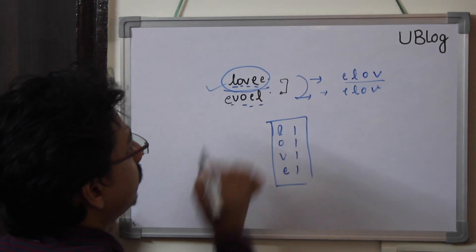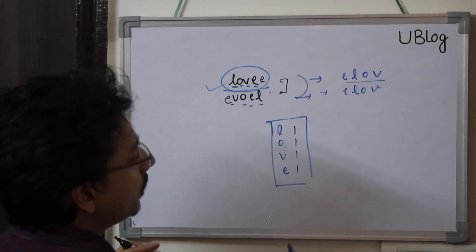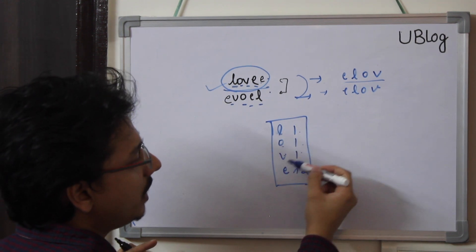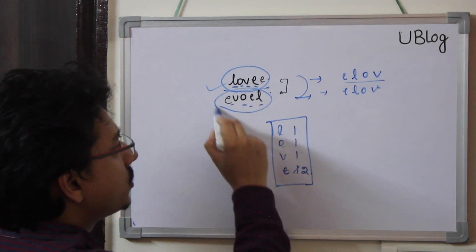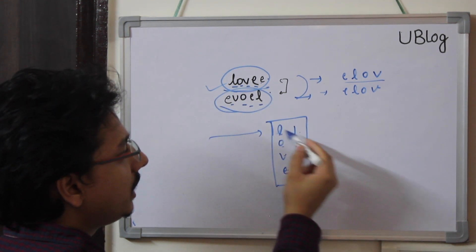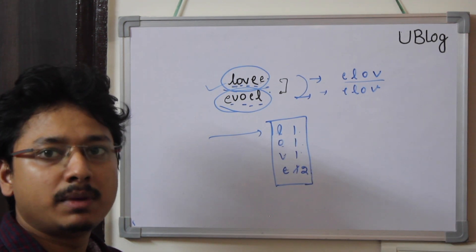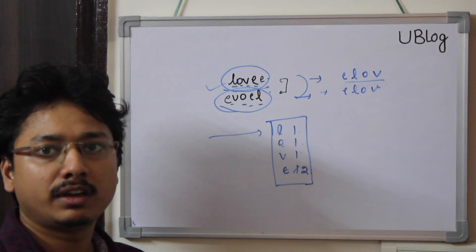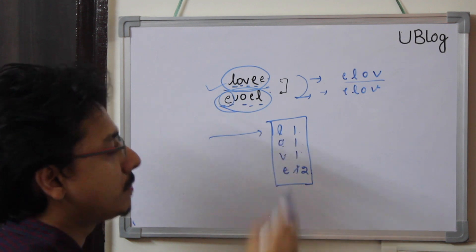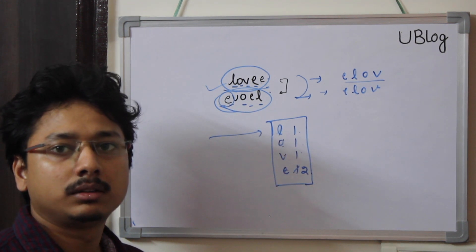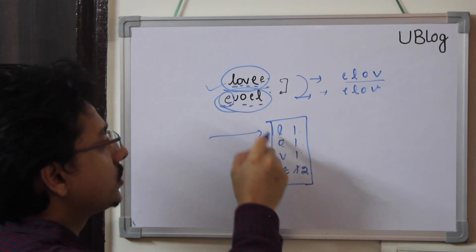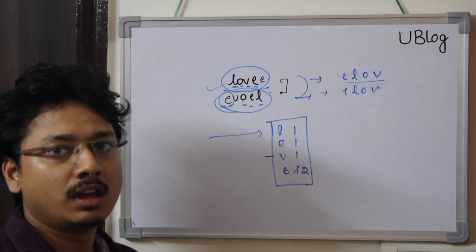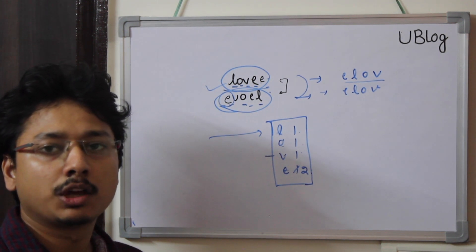If the string had one more E, you would increment the count to 2, making the hash map: L → 1, O → 1, V → 1, E → 2. Then when you traverse the second string, you look up each character in the same hash map and decrement its count. The check fails if you find a character not present in the hash map at all — meaning it was in the second string but not in the first.